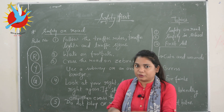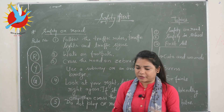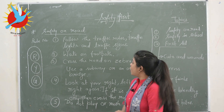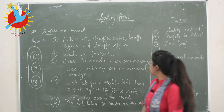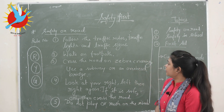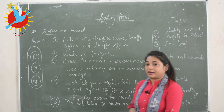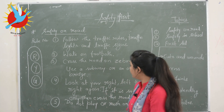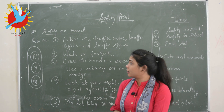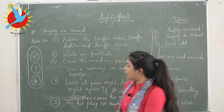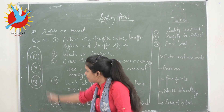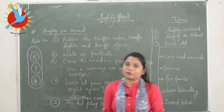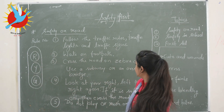Rule number two is walk on the footpath only — you should not walk on the main road because vehicles are going on them. Rule number three: cross the road on the zebra crossing. Use a subway or an overhead bridge if you need to cross the road. But before crossing, remember: the traffic light must be red only then you can cross the zebra crossing.